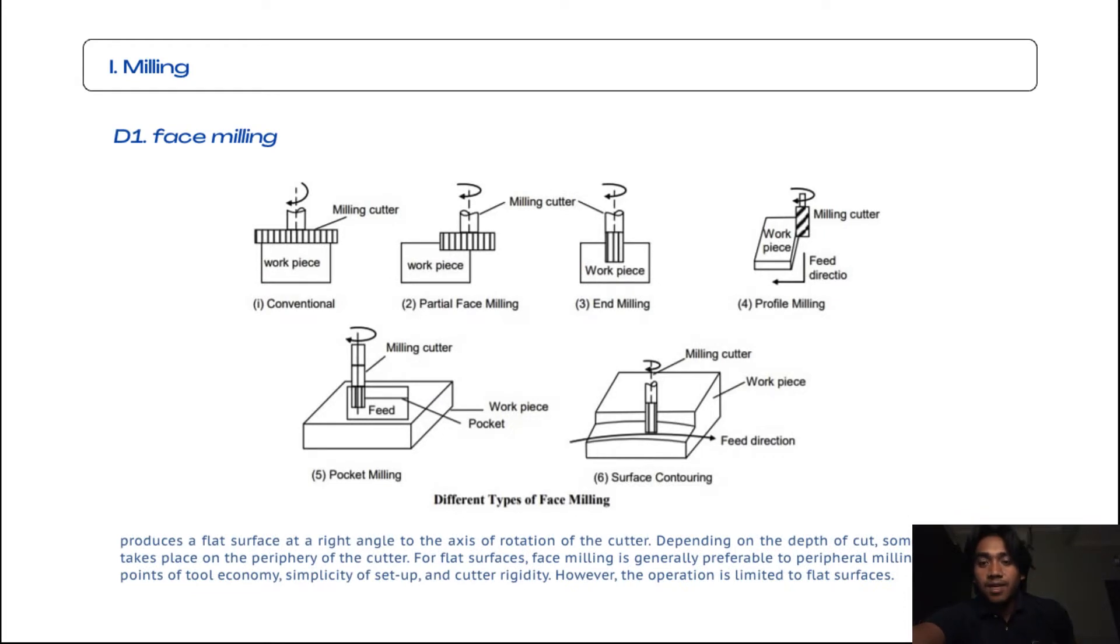Slots, contoured or stepped surfaces, and screw threads can also be produced. The first subtopic for milling is face milling. Face milling produces a flat surface at a right angle to the axis of rotation of the cutter. Depending on the depth of cut, some machining also takes place on the periphery of the cutter.